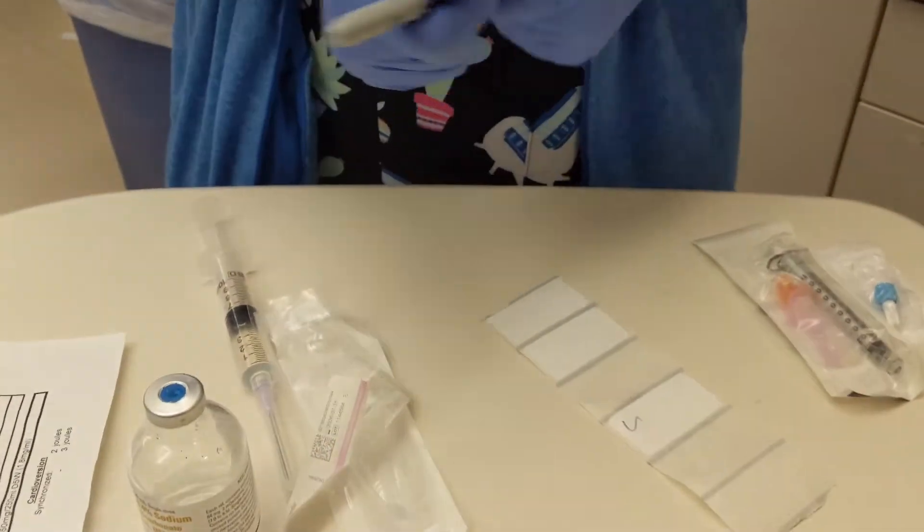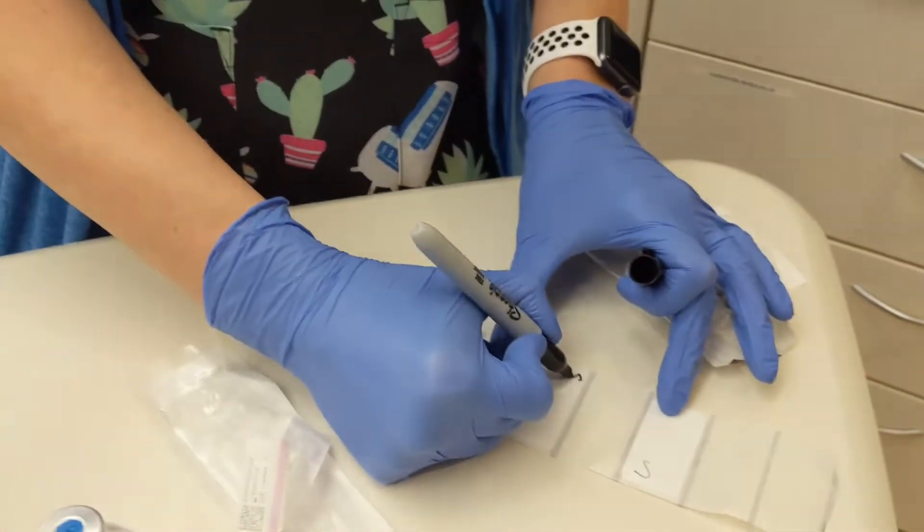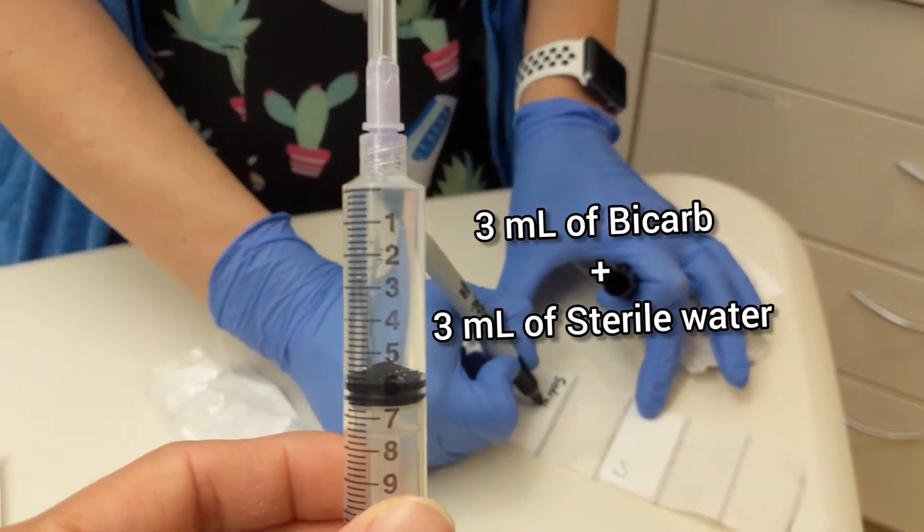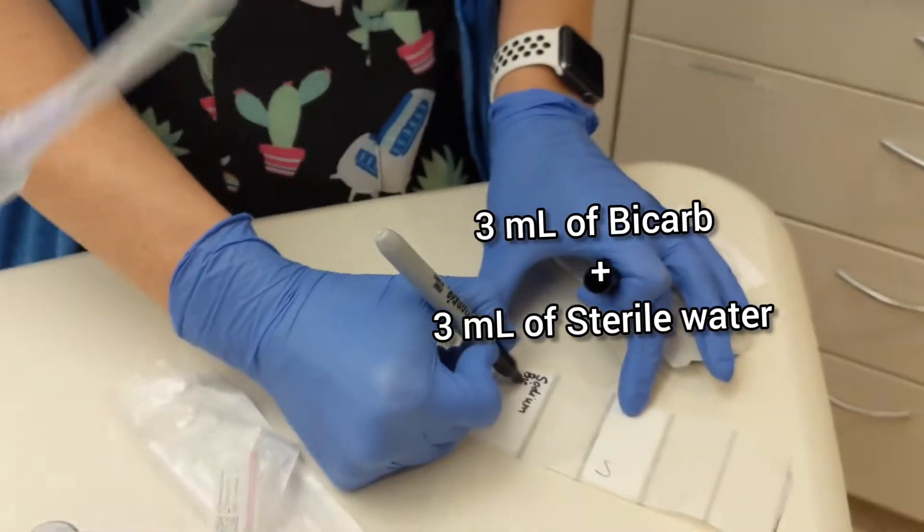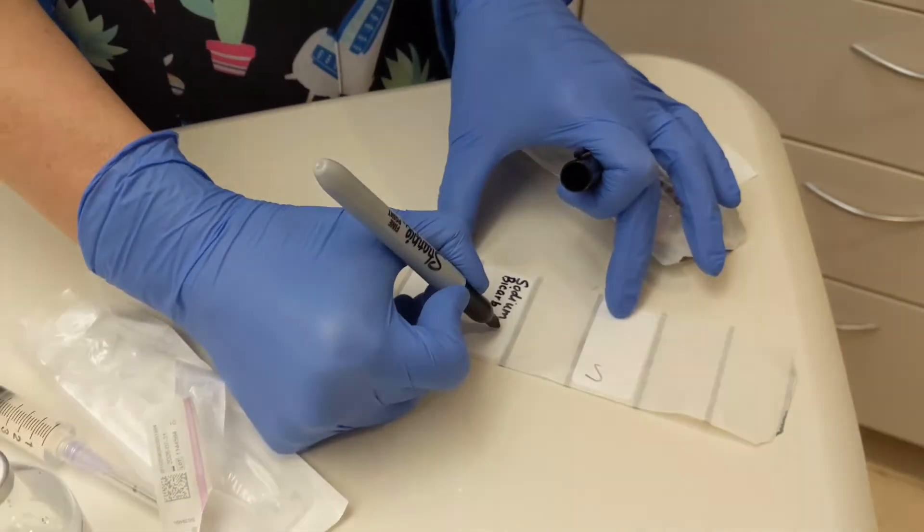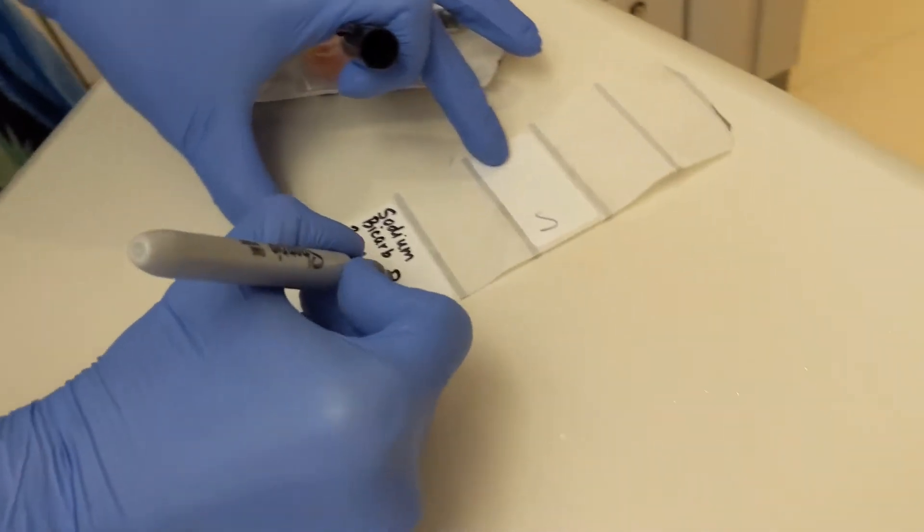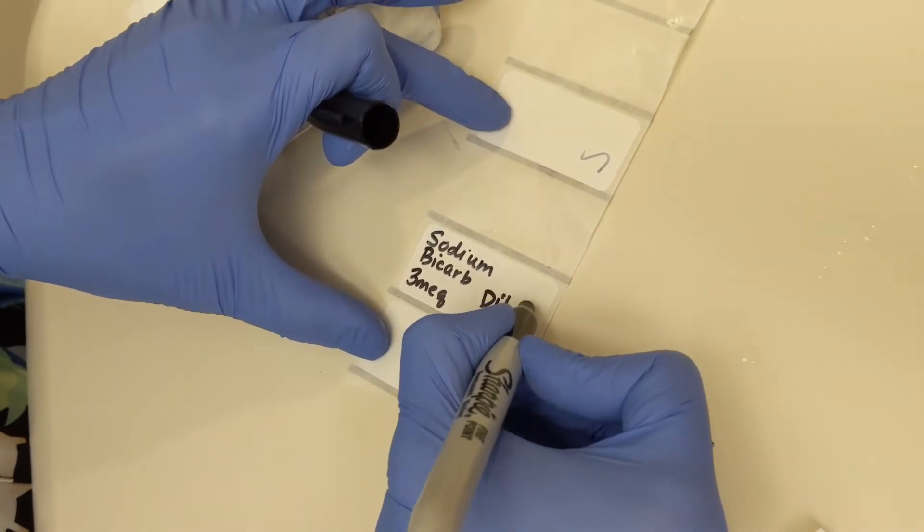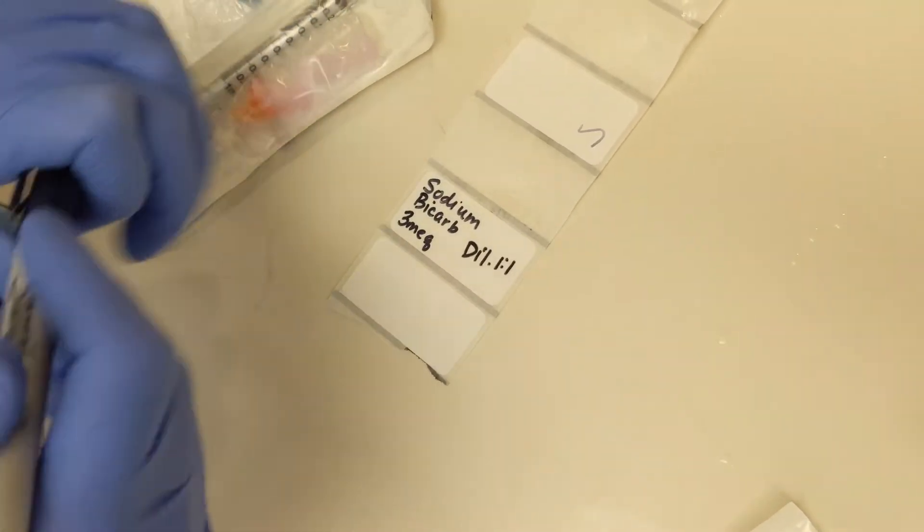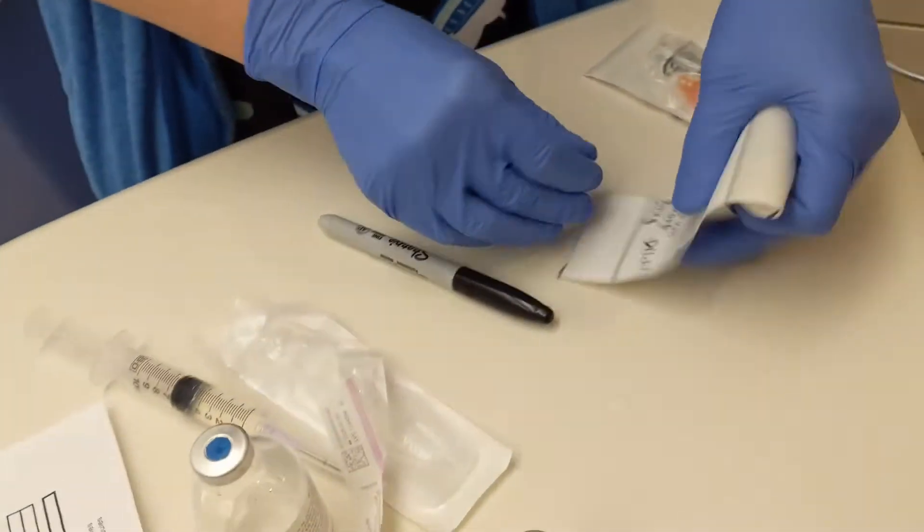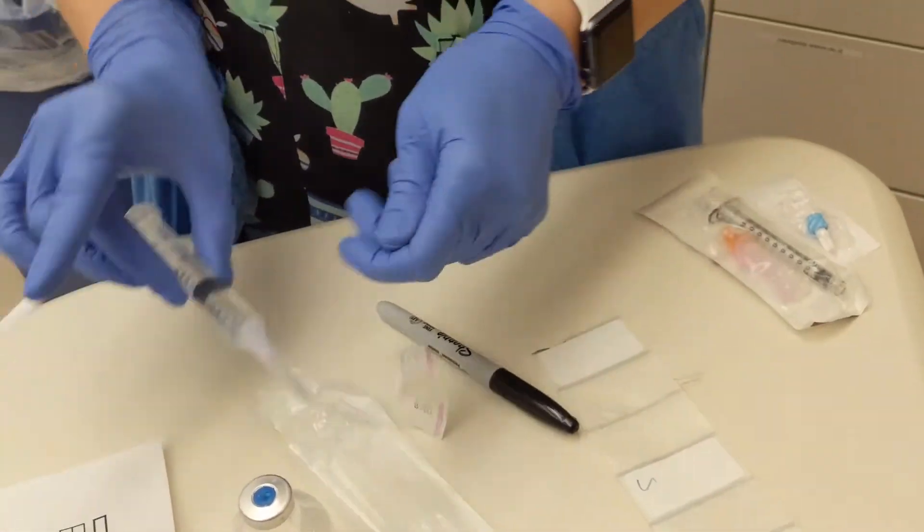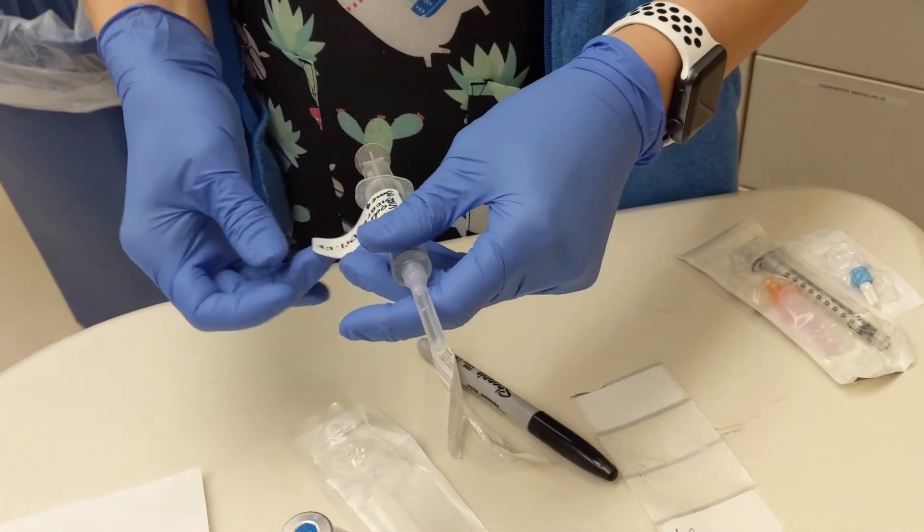And then when we make our label, sodium bicarb, 3 mEQs, and we write diluted 1 to 1. And that way people know that it's not in fact 6 of bicarb, or some sort of concentrated thing like that.